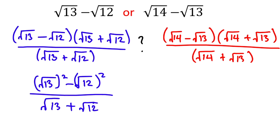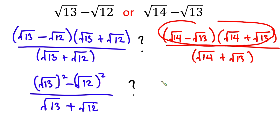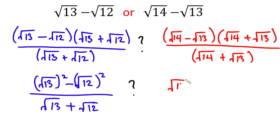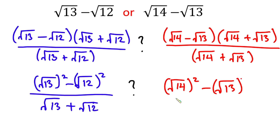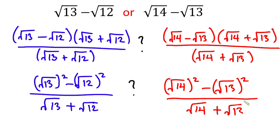Then from here we're gonna do the same thing. We can see that this one can also be written in terms of difference of two squares, which is square root of 14 all squared minus square root of 13 all squared, all divided by square root of 14 plus square root of 13.